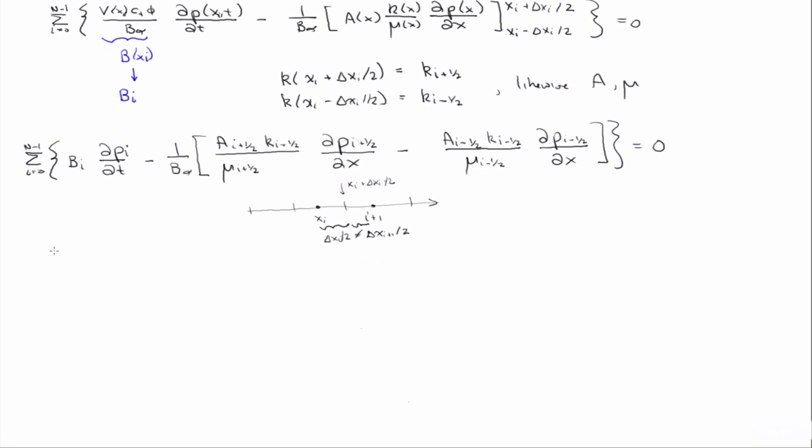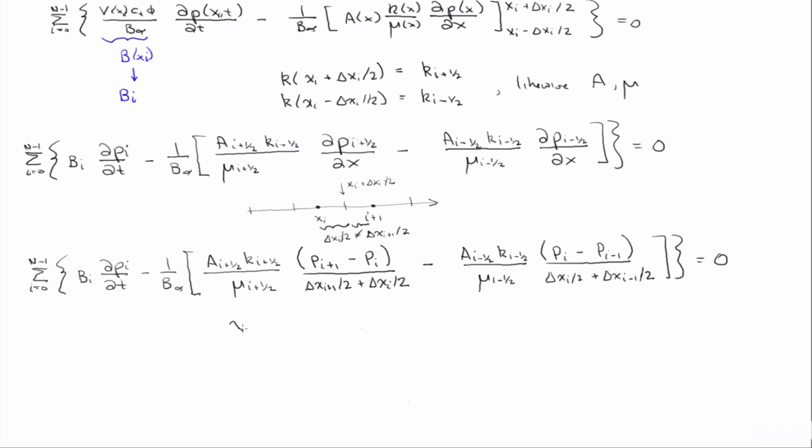So, if we do that, then we're going to define delta xi plus a half as delta xi plus delta xi over two, and likewise, delta xi minus a half as delta xi plus delta xi minus one over two. And so, with that definition, then what we'll do is, I'll go ahead and distribute the formation volume factor into this next equation.